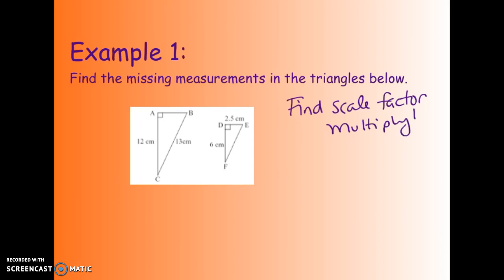For example, if I'm looking at these two triangles, the first thing you want to notice is that you have a pair of sides that are already known, a pair of corresponding sides: 12 and 6.